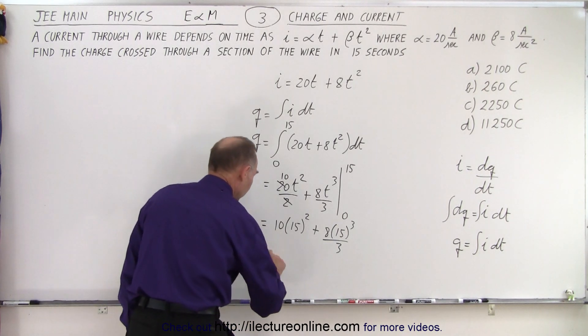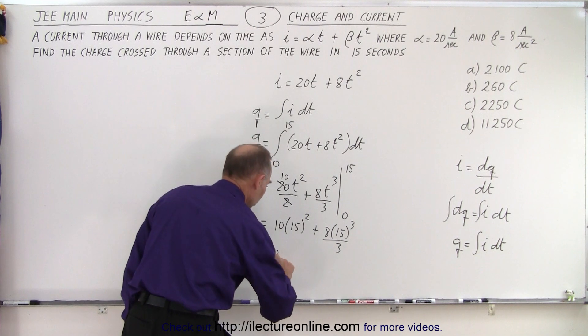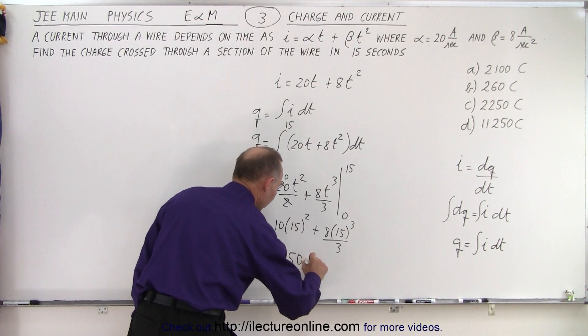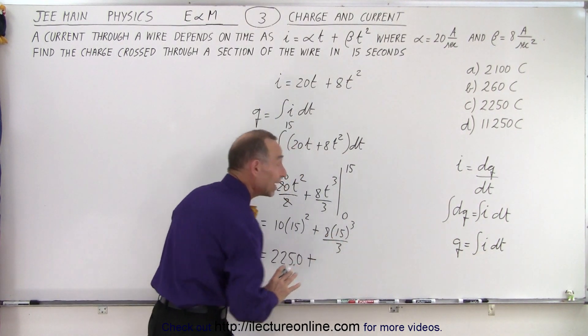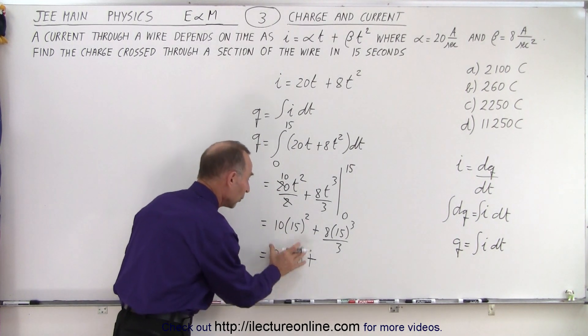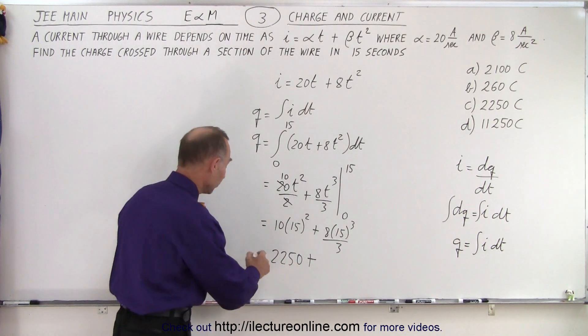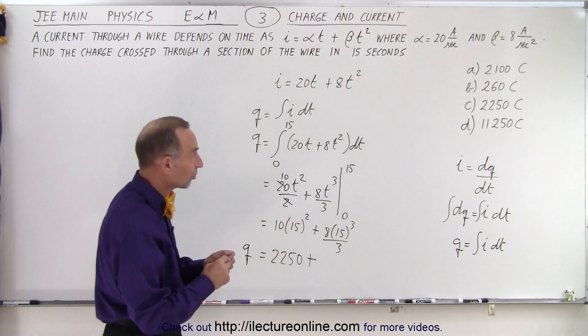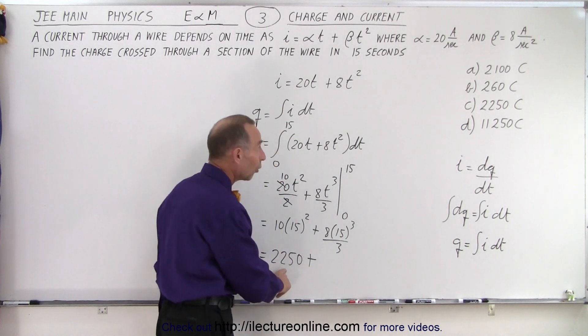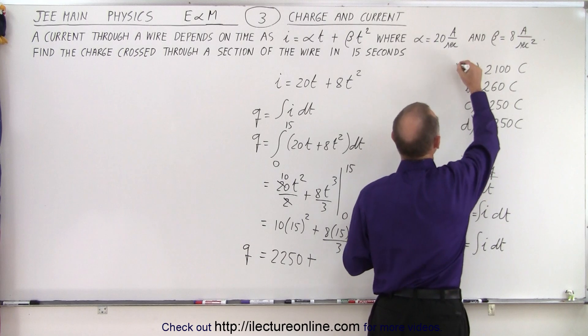When we start working this out, we have 15 squared, that's 225 times 10, that's 2250. Now let's see what we have so far. With the first term, we end up at 2250, of course these are coulombs because we're looking for charge q.